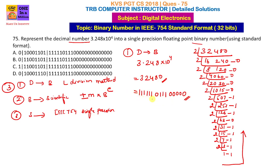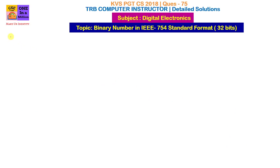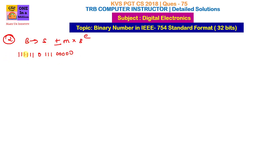Next, convert binary to scientific form. Scientific form is plus or minus mantissa into base power exponent. Shift the decimal point to the left — multiply by 2 for each shift — to normalize the number.